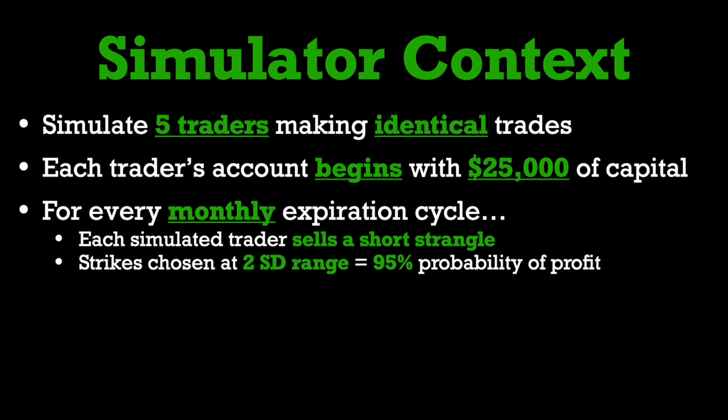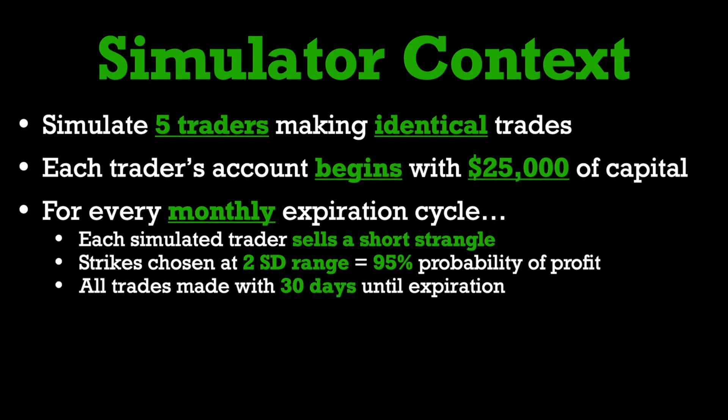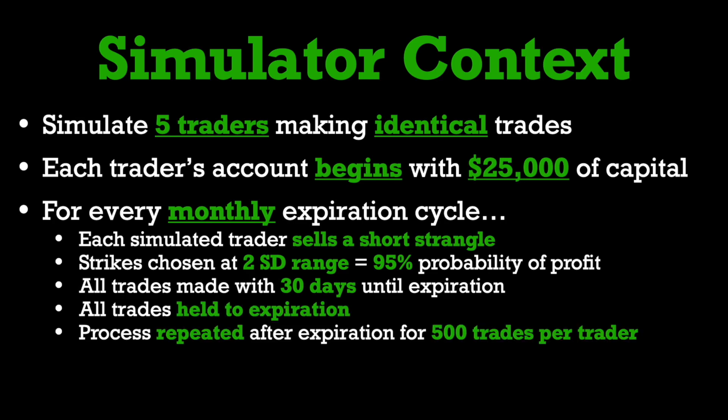A short strangle is a combination of selling both an out-of-the-money call option and an out-of-the-money put option at the same time. The strikes of the contracts will be chosen at a two standard deviation range, which basically means every trade is going to have a statistical probability of making a profit of 95% — a very high chance of making money. Each strangle will be made with 30 days until expiration and held all the way to expiration, then repeated for a total of 500 trades for each trader.